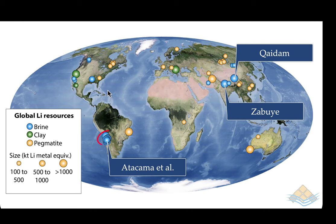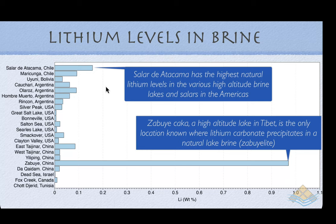We're going to focus on Salar de Atacama in the Andes and we're going to look at the Chinese brine systems in Zebuye and Qaidam, focusing mainly on Zebuye which is a perennial lake system, while Atacama is a salar or salt flat derived lithium system. Looking at the lithium content in these two regions, Salar de Atacama has the highest lithium content — up to 1,500 ppm in the natural brine systems beneath the flat surface of the salar.